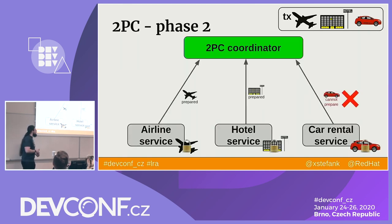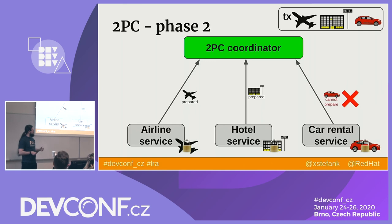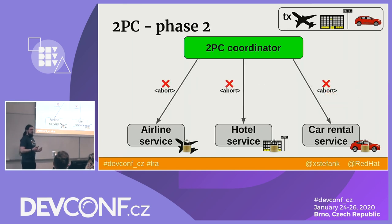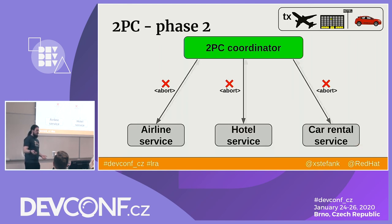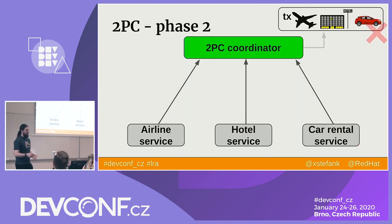If something doesn't go well — for instance, we cannot reserve the car because there are no more cars left — we need to abort all resources because the whole transaction cannot be completed. The coordinator sends an abort message, logs are removed, resources are forgotten, an OK message is sent back, and we are finished with the failure. The caller can then repeat the transaction at a later time or take some other action.